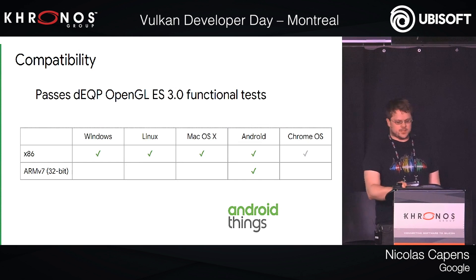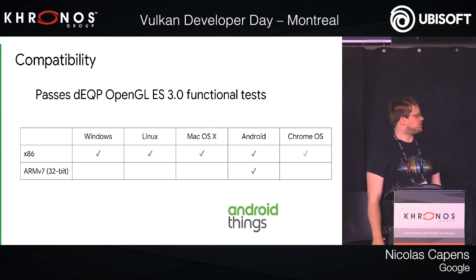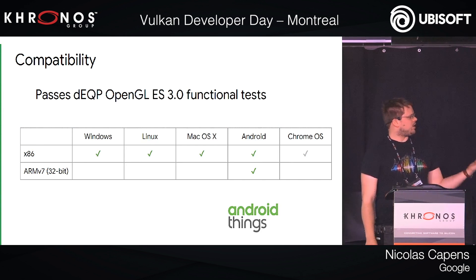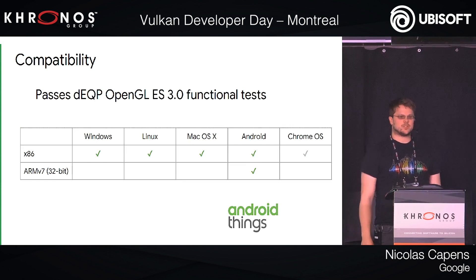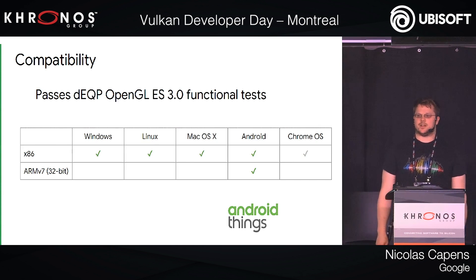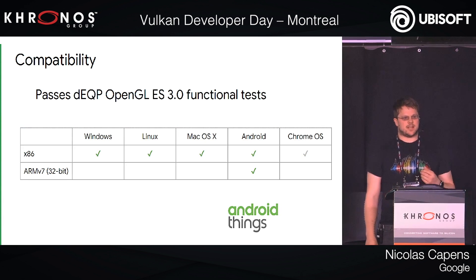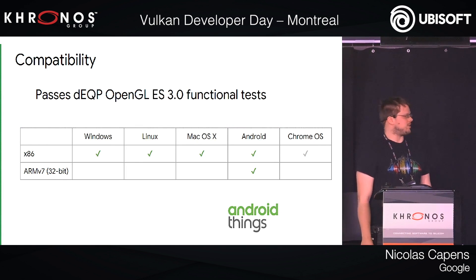Where do we stand today? We fully support OpenGL ES 3 for the dEQP test suite. We will be submitting to the Khronos suite soon, so we get fully ratified. We support all the major platforms now, Chrome OS is coming soon, and we recently added ARM support so you can run it on actual Android devices. Some devices have really old GPUs or drivers that can't pass Android requirements, so that's where we run SwiftShader instead.